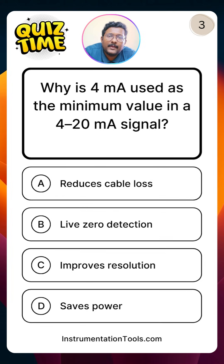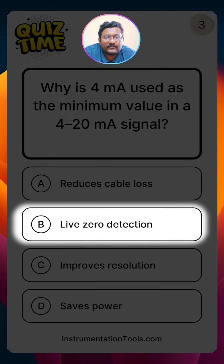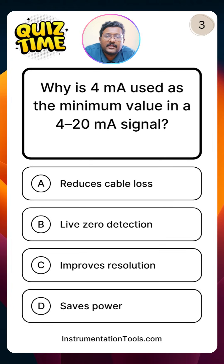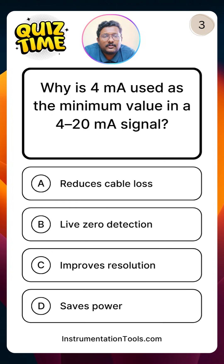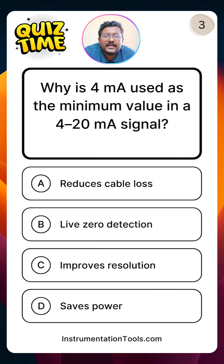Why is 4 milliampere used as a minimum value in a 4 to 20 milliamp signal? What is the primary advantage of using 4 milliampere instead of 0 milliampere? It is for live zero detection — option B. Live zero means it is easy to identify a true zero reading versus an actual failure. If we have 4 milliampere, the PLC identifies this as a true zero reading. If the cable is broken or the sensor is faulty, the PLC can easily identify this faulty signal — we call this live zero detection.